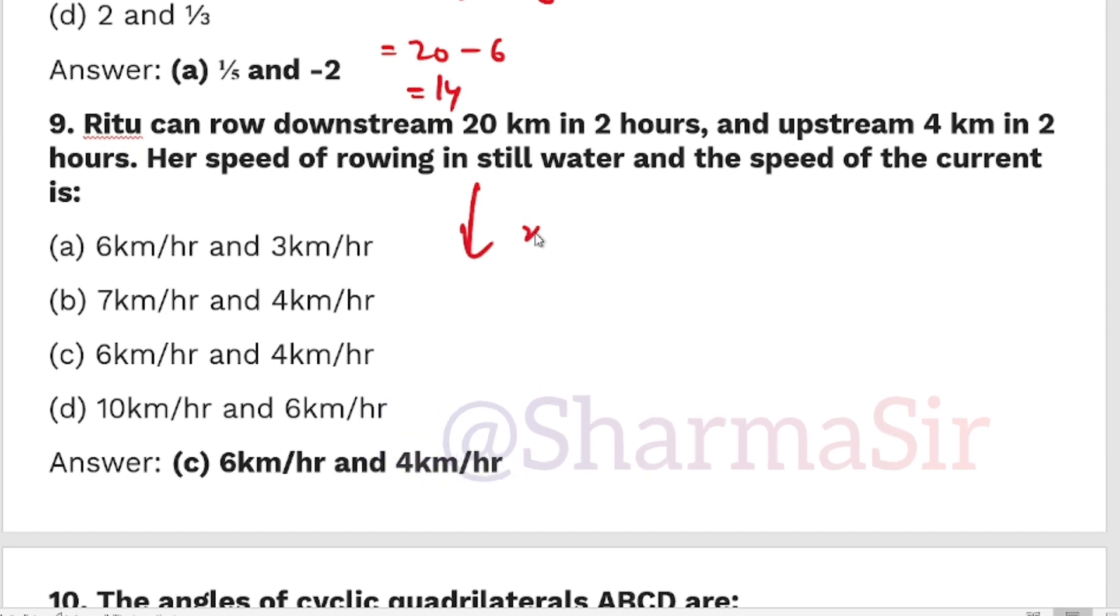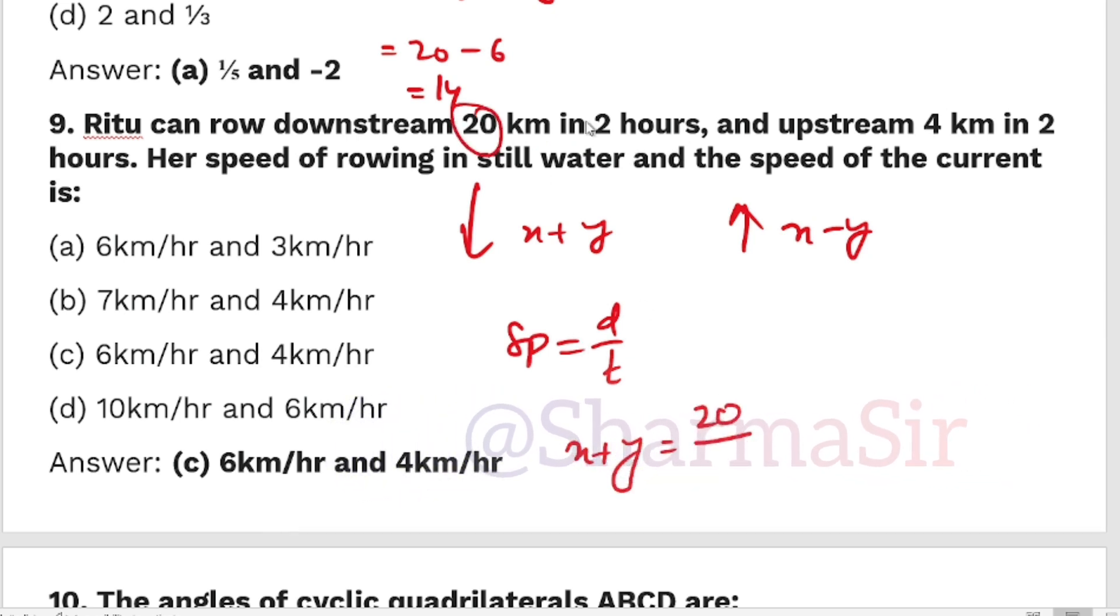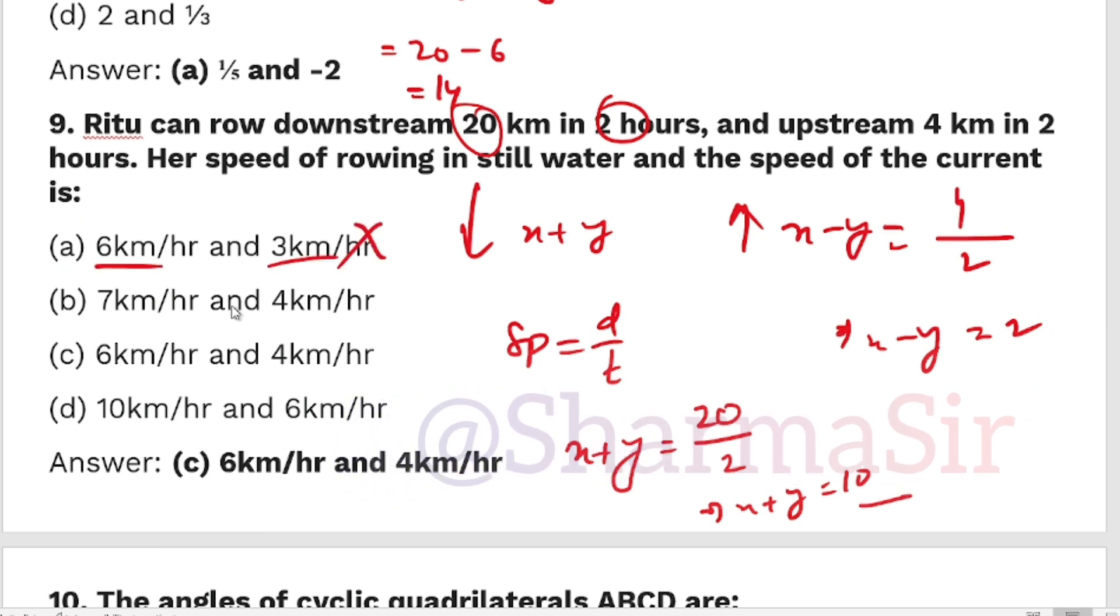Ritu rows downstream 20 km in 2 hours. Downstream is plus, upstream is minus. Speed equals distance by time. So x+y equals 20 divided by 2 hours, which gives x+y=10. Upstream 4 km in 2 hours, so x-y=2. Adding these equations: 6+4=10, 7+4 is not 10, but 6+4=10 and 6-4=2. So the third option is the correct answer.